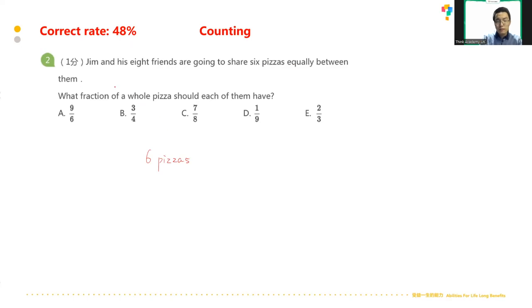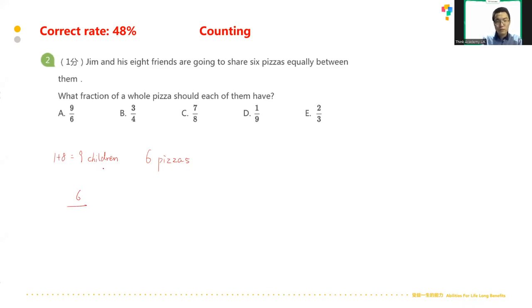For this type of question, we need to find the whole and how many people are sharing it. The whole is six pizzas. We have Jim — that's one — and his eight friends, so one plus eight is nine children. Nine children sharing six pizzas equally. The numerator should be six because they're sharing pizzas, not sharing children. So it's six pizzas over nine children, which simplifies to two thirds. The correct answer is E: each child gets two thirds of one pizza.